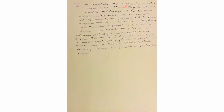Question 6: the probability that a person has a certain disease is 0.03. If the disease is present, the probability the diagnostic test gives a positive result is 0.90. If the disease is not present, the probability of a positive test result is 0.02. Given a positive test result, what is the probability the disease is actually present? And what is the probability of a positive test result?